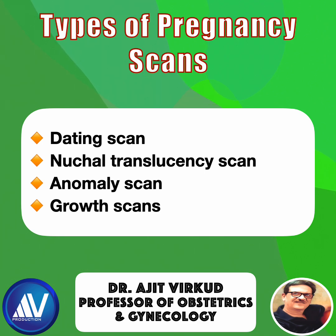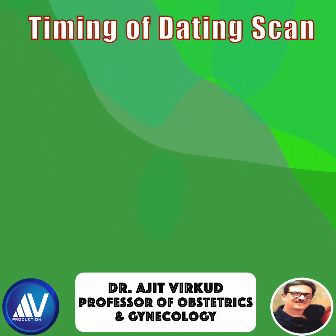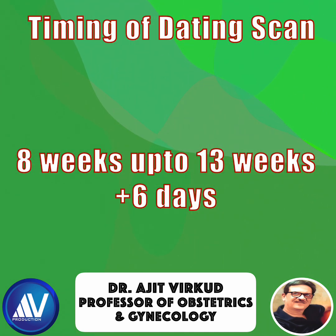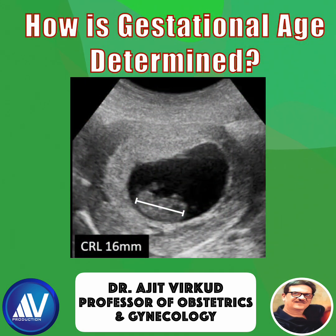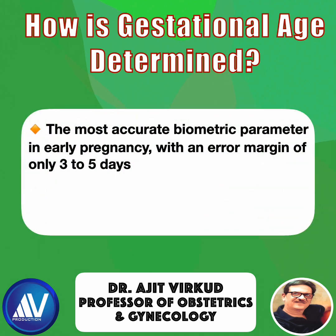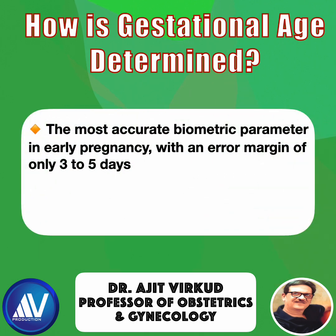But the accuracy of all these later scans depends on how well we date the pregnancy in the beginning. A transvaginal scan is done between 8 weeks up to 13 weeks and 6 days. Gestational age is calculated using the crown rump length. CRL is the most accurate biometric parameter in early pregnancy, with an error margin of only 3 to 5 days.